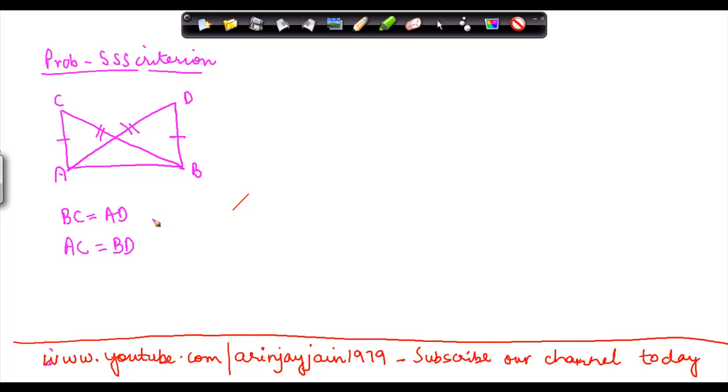Now I have to prove whether triangle ABC is congruent to triangle ABD.